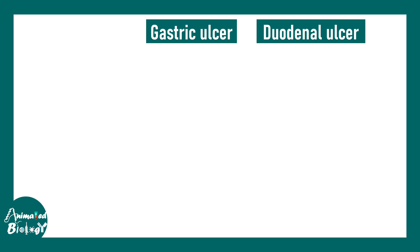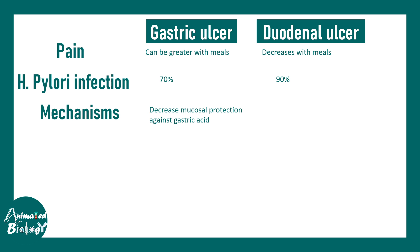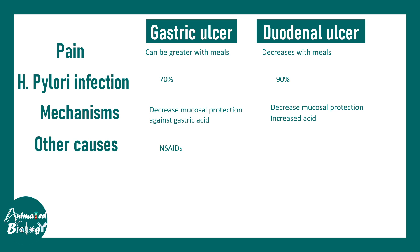Overall, peptic ulcer disease has two broad categories: gastric ulcer and duodenal ulcer, which differ by location. Gastric ulcers occur in the stomach and are strongly associated with H. pylori. Duodenal ulcers occur in the duodenum. Regarding pain, gastric ulcers are more painful and pain can increase with meals, while duodenal ulcer pain can decrease with meal intake. H. pylori infection is associated with both. The mechanism in gastric ulcers involves decreased mucosal protection against gastric acid, and in duodenal ulcers there is also mucosal protection defect due to increased acidity.